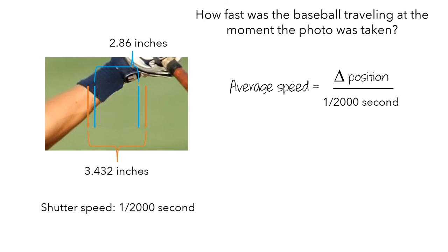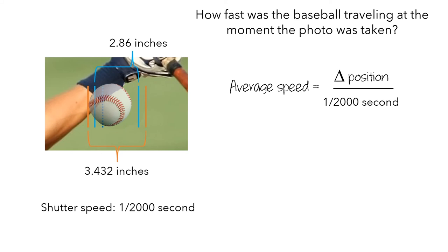When the shutter was first open, the ball started back here. So at the beginning of the time interval, the leading edge of the ball was here. Then while the shutter was open, the ball traveled over here, so the leading edge traveled this distance. And if we shift the measure of the diameter over, we can see that we can compute the distance the ball traveled by subtracting the length of the blur minus the diameter of the ball to get 0.572 inches.